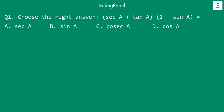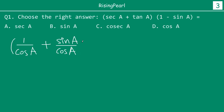So we have sec a plus tan a. Like we just discussed, we are going to express them as much as possible in terms of sine and cos. So sec a will be 1 by cos a. Then 1 by cos a plus tan a, which is sine a by cos a, and this is multiplied by 1 minus sine a. So let's solve this and see what we get.